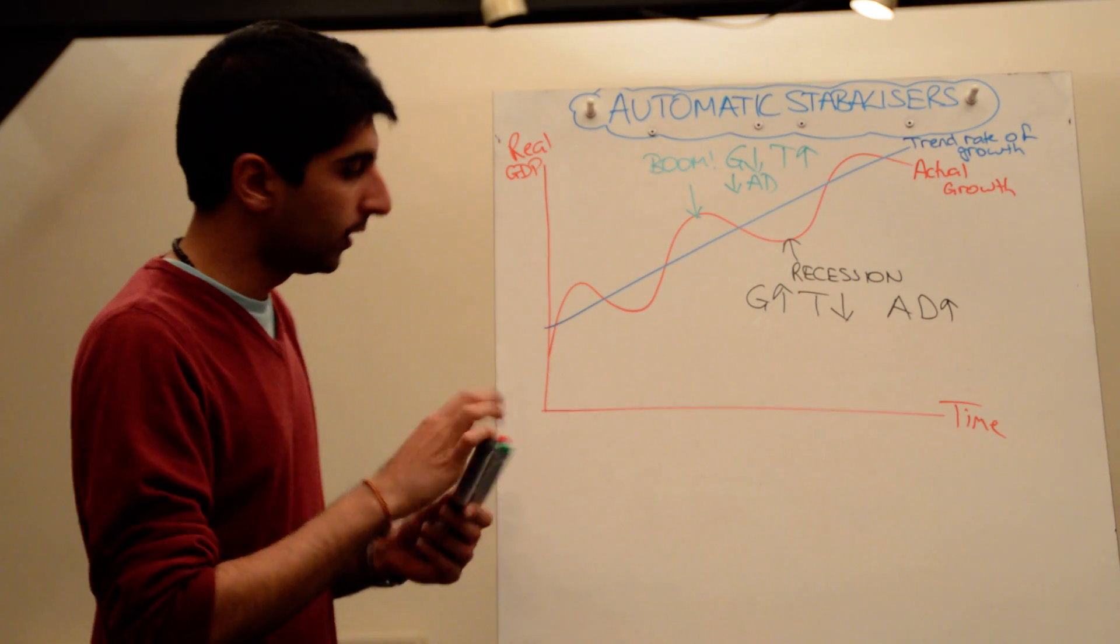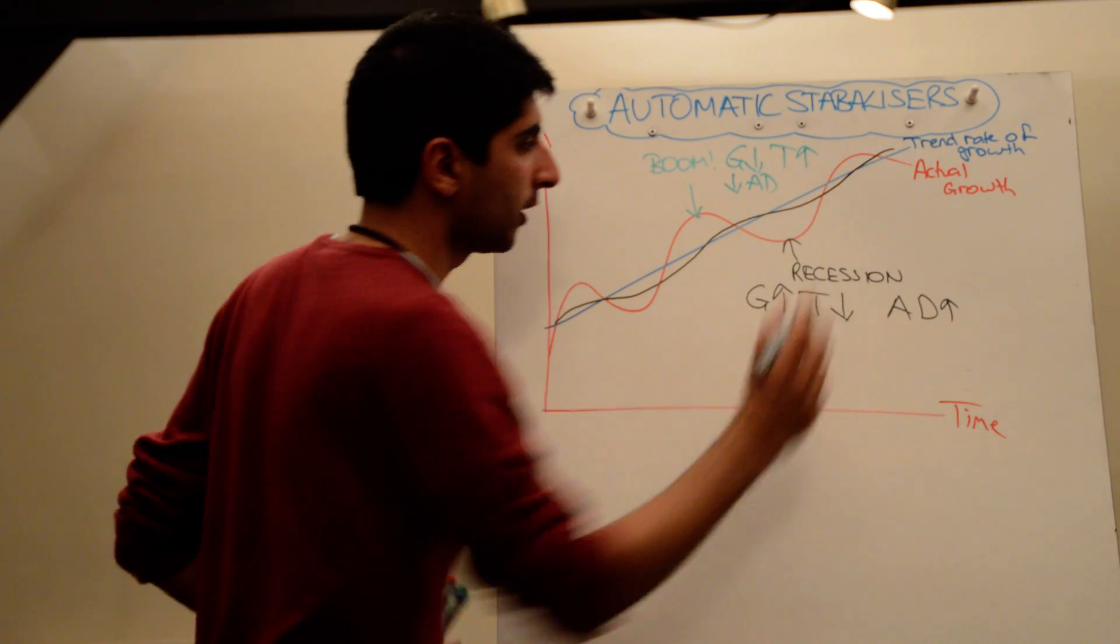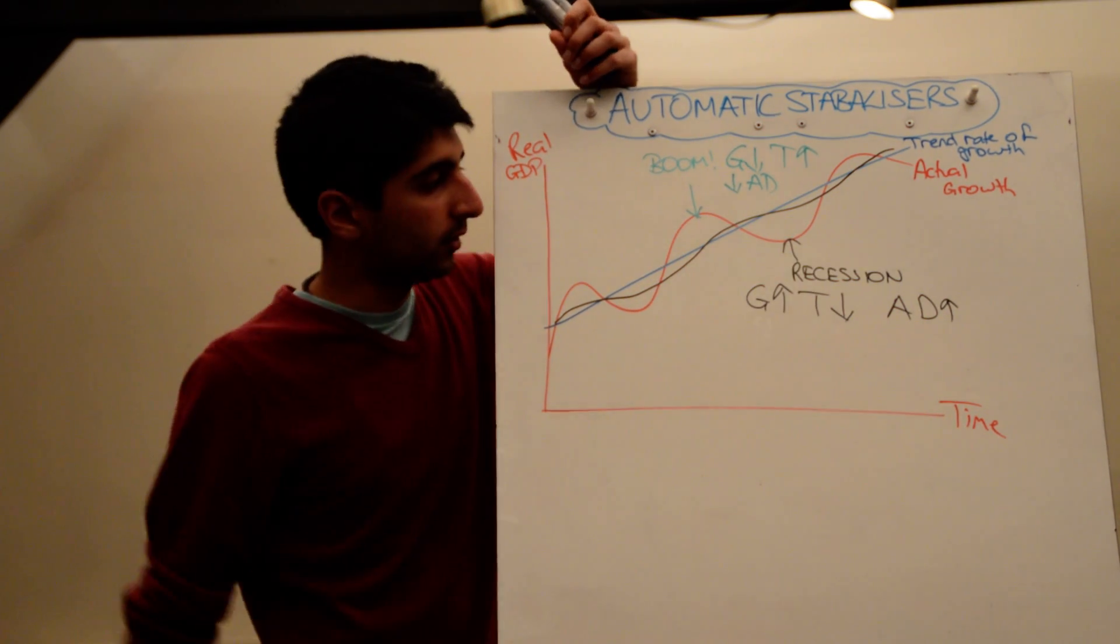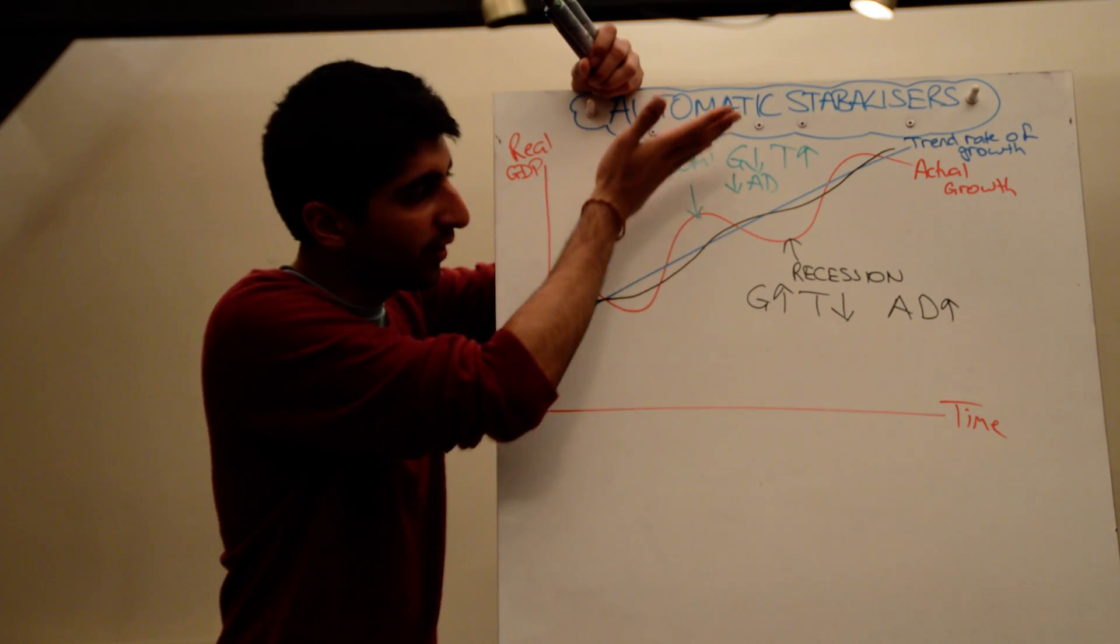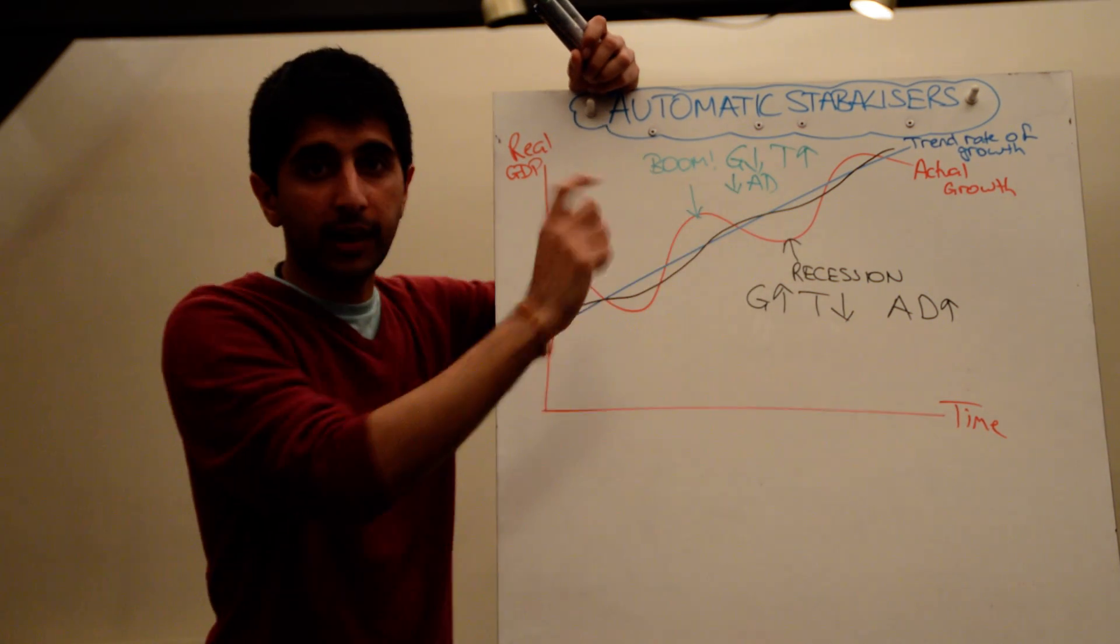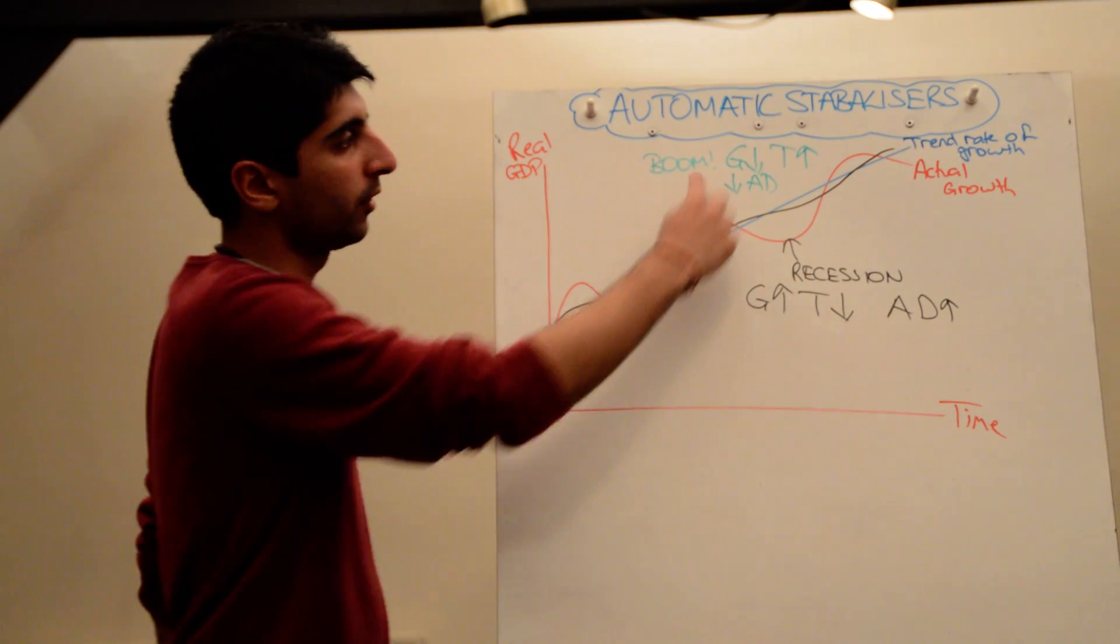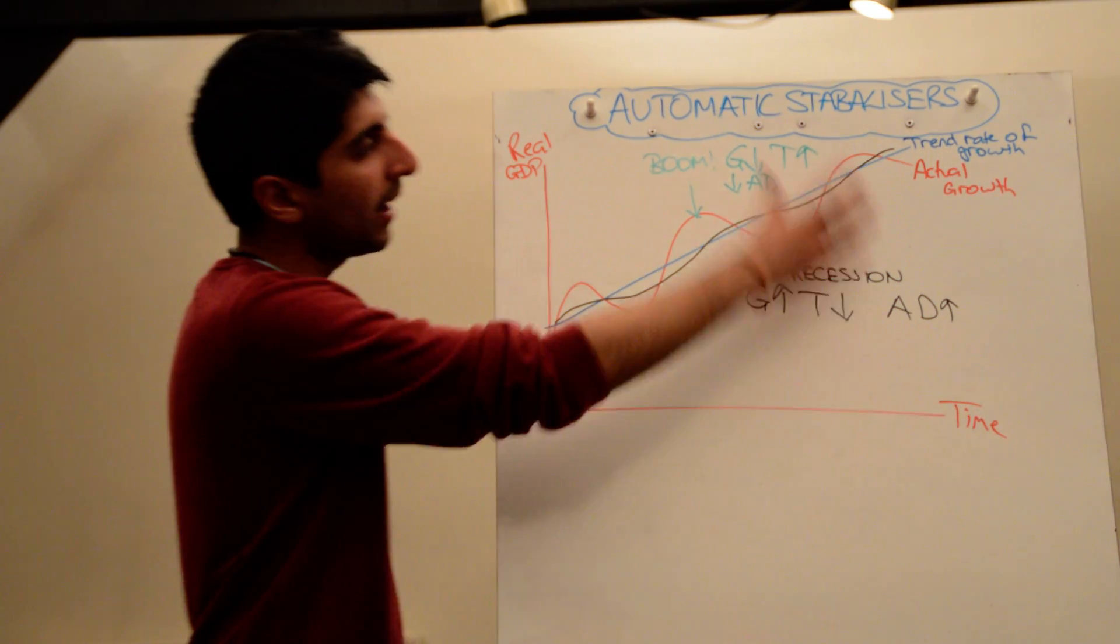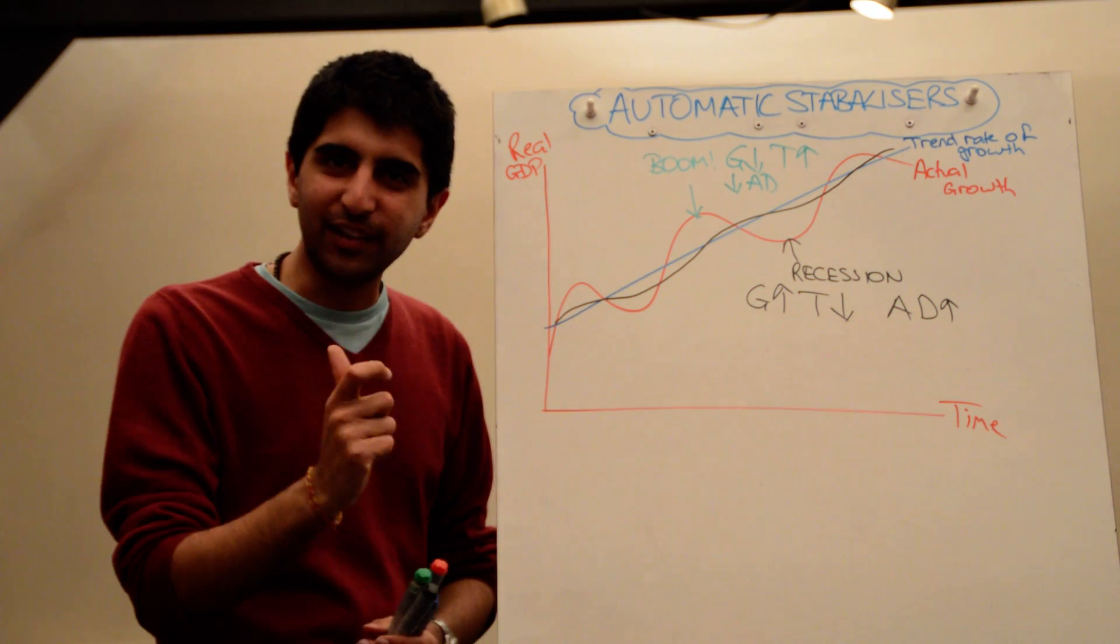If I do it in black, what we actually see is actual growth not deviating from trend growth as much because the automatic stabilizers reduce the depth of the recession via an automatic increase in aggregate demand because of these factors. And in a boom time the level of growth automatically stabilizes, it decreases because of the automatic reduction in aggregate demand slightly because of the contractionary effects from the fiscal policies here, but from the negative effects of the automatic stabilizers. So bear that in mind, automatic stabilizers stabilize the economy automatically without any need for active fiscal policy.